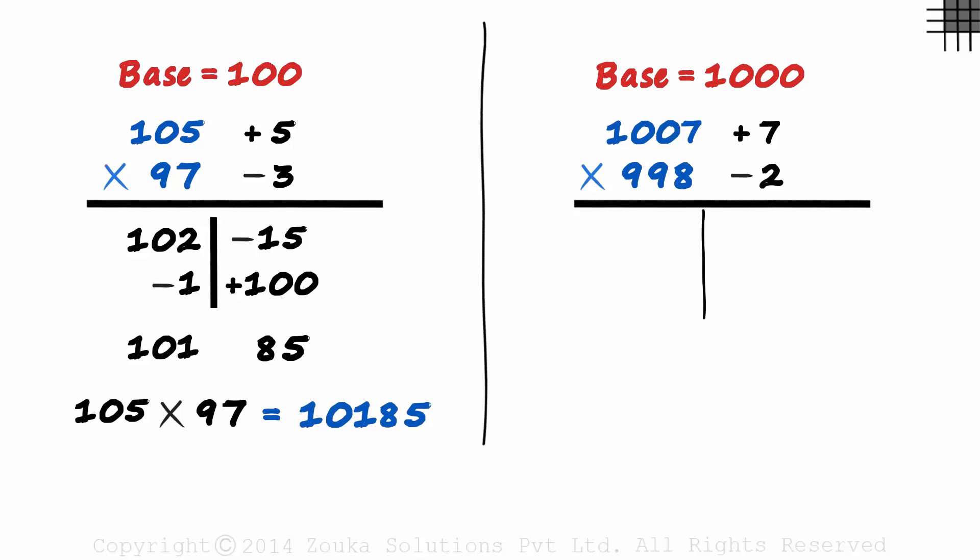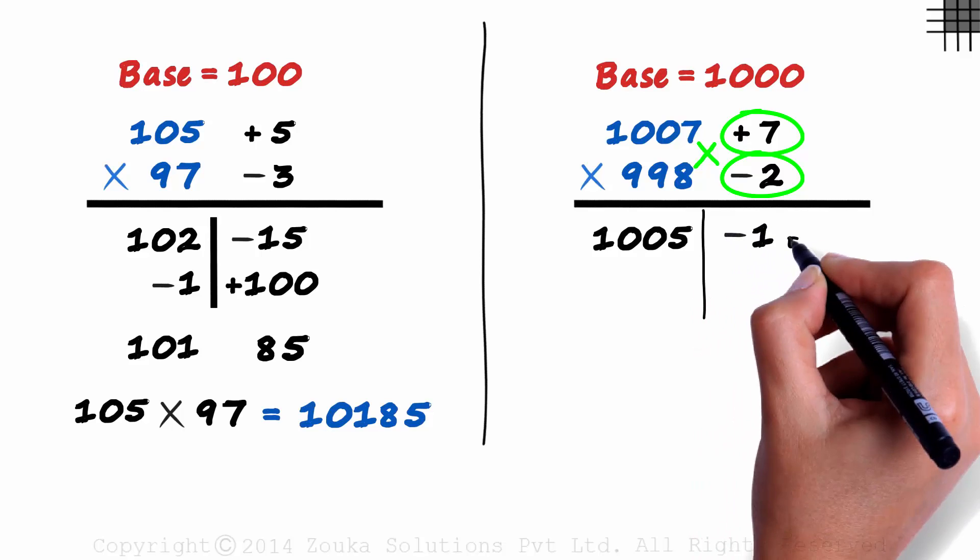Once the deviations are done, we write the sum on the left and the product on the right. 1007 plus minus 2 is 1005 and 7 times minus 2 is minus 14.